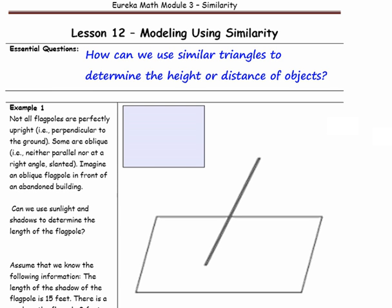Example 1. Not all flagpoles are perfectly upright, that is to say, perpendicular to the ground. Some are oblique — neither parallel nor at a right angle — slanted. Imagine an oblique flagpole in front of an abandoned building.